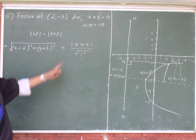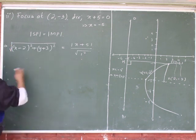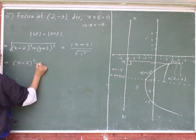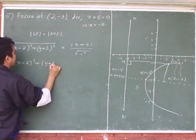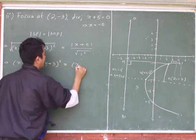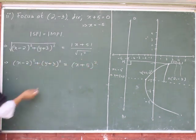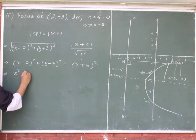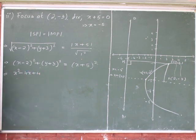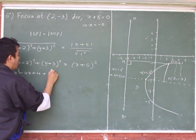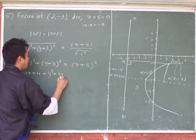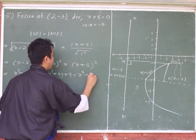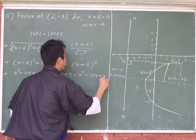The coefficient of x in the directrix equation is 1, so no need to write the denominator. Squaring both sides, we get: (x minus 2) squared plus (y plus 3) squared equals (x plus 5) squared. Now start expanding: x squared minus 4x plus 4, then y squared plus 6y plus 9, and on the right side x squared plus 10x plus 25.